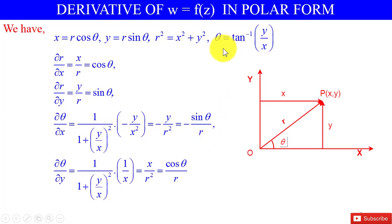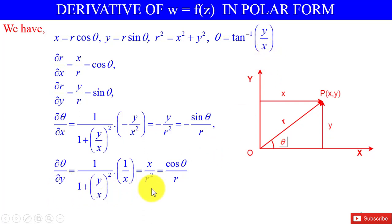Again, differentiating θ = tan⁻¹(y/x) partially with respect to y, we have ∂θ/∂y = cosθ/r.